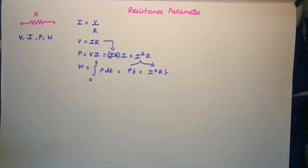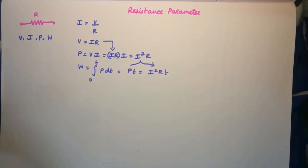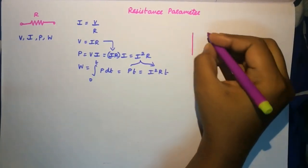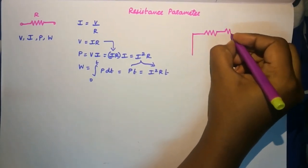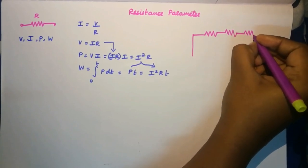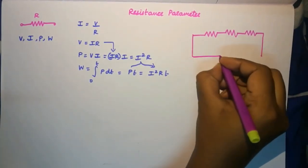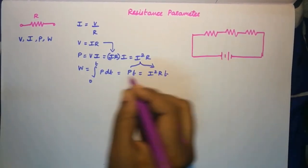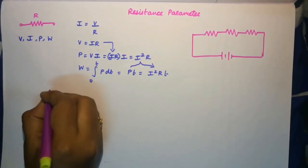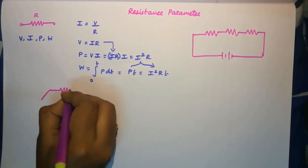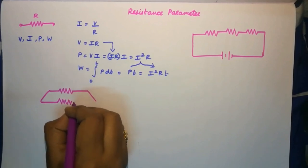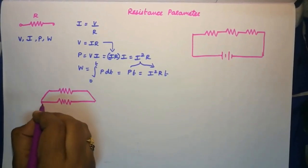Now let us find the relationship between different sets of resistors when they are connected in a series manner, as well as in a parallel manner. What do we mean by series connection and parallel connection?